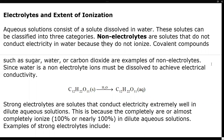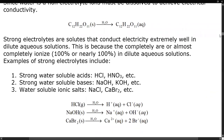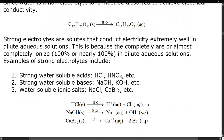Strong electrolytes are solutes that conduct electricity extremely well in most dilute solutions, because they're completely or almost completely ionized in dilute aqueous solutions. Examples include strong water-soluble acids like hydrochloric or nitric, strong water-soluble bases like alkaline metal hydroxides — sodium hydroxide, potassium hydroxide — and water-soluble ionic salts like sodium chloride and calcium bromide. When HCl gas dissolves in water, you form H+ and Cl−. Notice there's a one-directional arrow — everything is going to products. Sodium hydroxide ionizes to form sodium+ and hydroxide−, forming separate ions in solution.